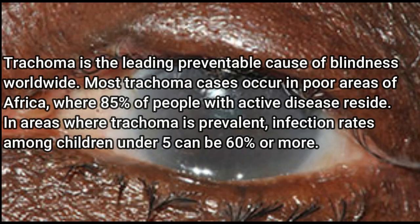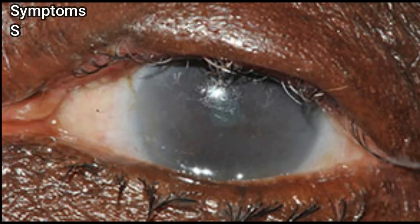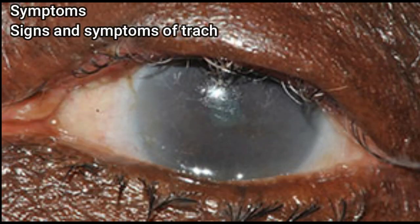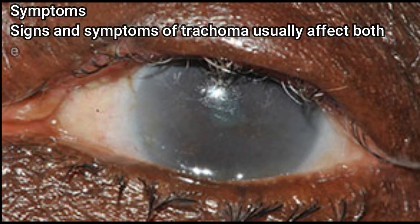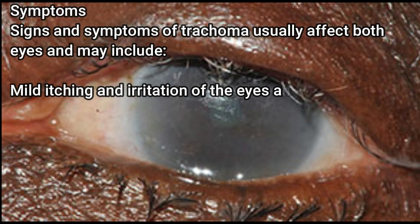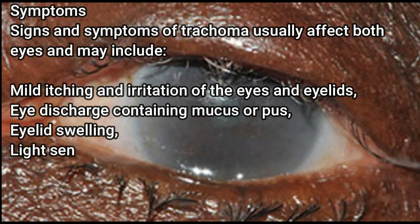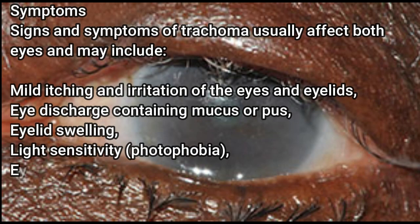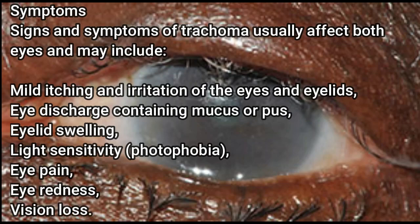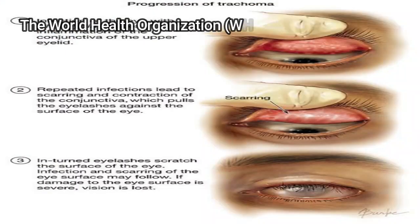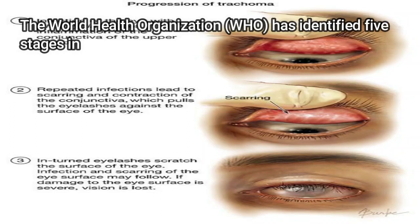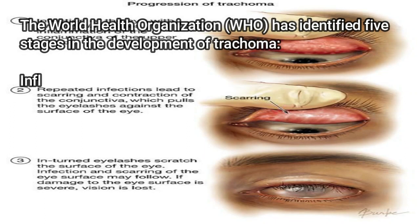In areas where trachoma is prevalent, infection rates among children under 5 can be 60 percent or more. Signs and symptoms of trachoma usually affect both eyes and may include: mild itching and irritation of the eyes and eyelids, eye discharge containing mucus or pus, eyelid swelling, light sensitivity (photophobia), eye pain, eye redness, and vision loss.